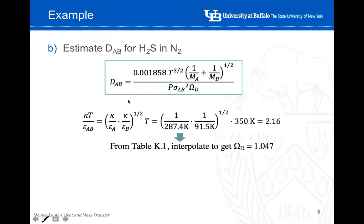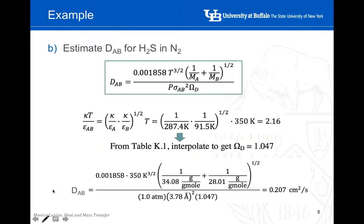We now have all the elements needed: temperature, molecular weights, pressure, Lennard-Jones parameters, and the collision integral omega. After performing all the calculations, the diffusion coefficient of H₂S in nitrogen (D_AB) is equal to 0.207 cm² per second.